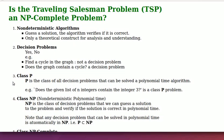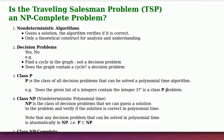Class P is the class of all decision problems that can be solved by a polynomial time algorithm. For example, the decision problem 'does the given list of n integers contain the integer 3?' is a class P problem, as we can solve it in polynomial time. We can step through the list, compare each item, check if it equals 3, and do this in linear time.